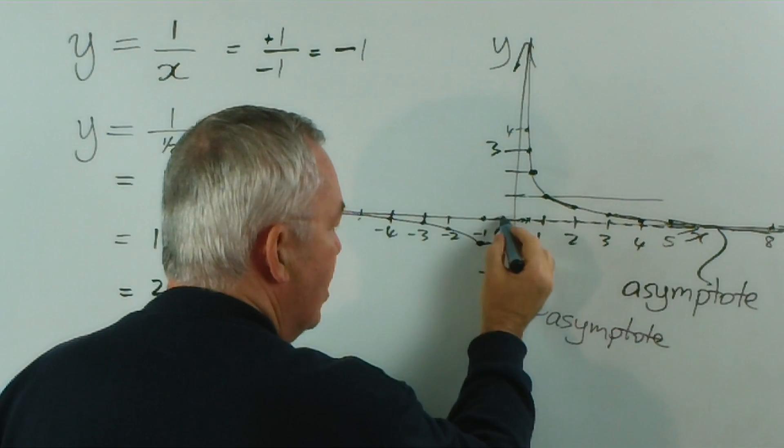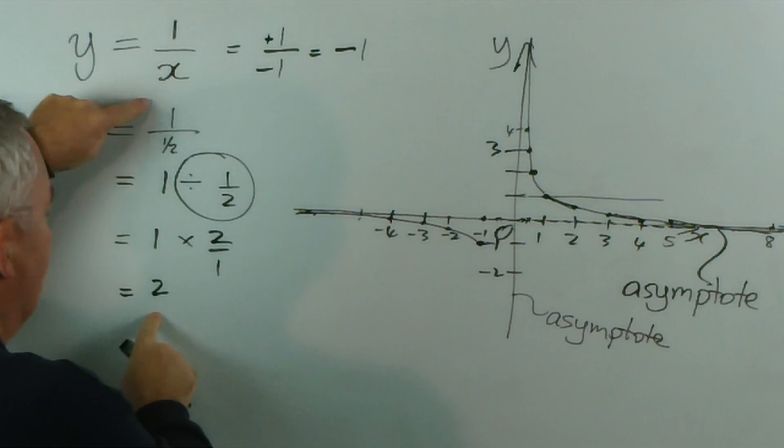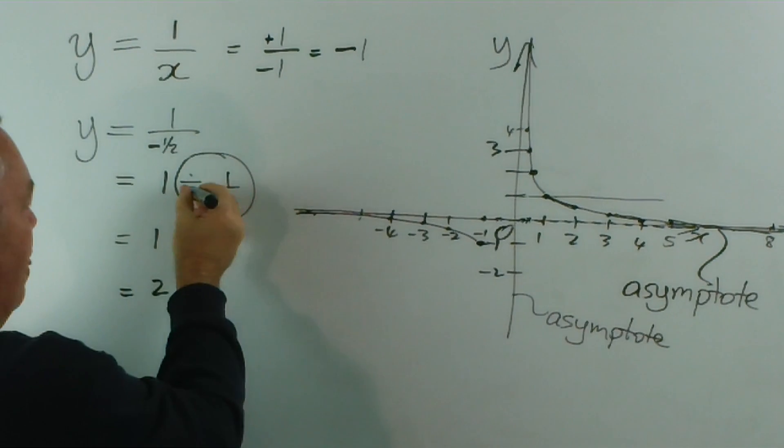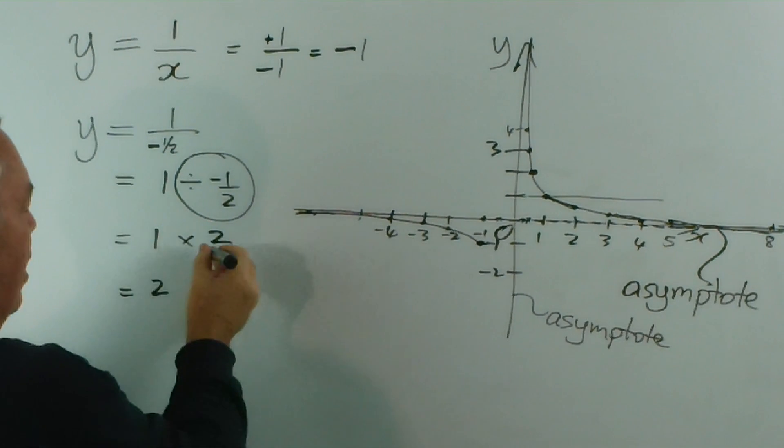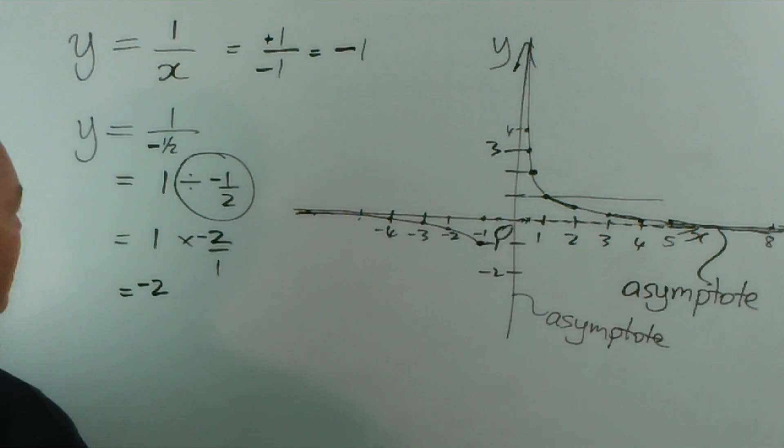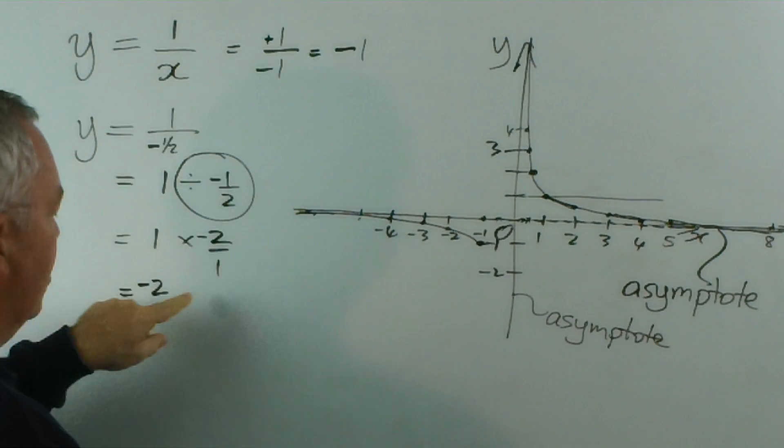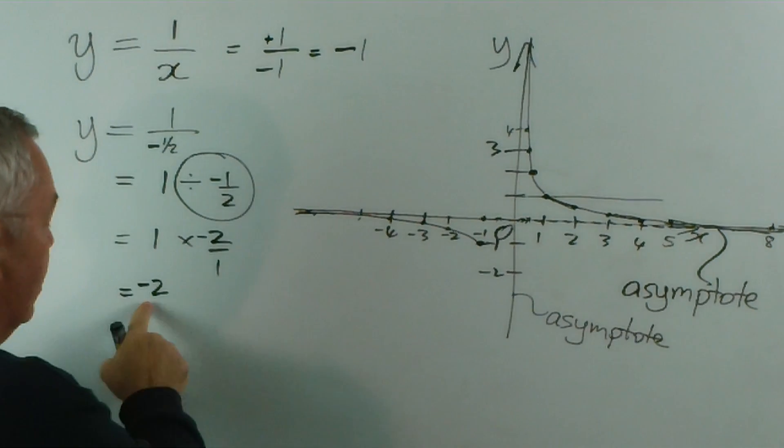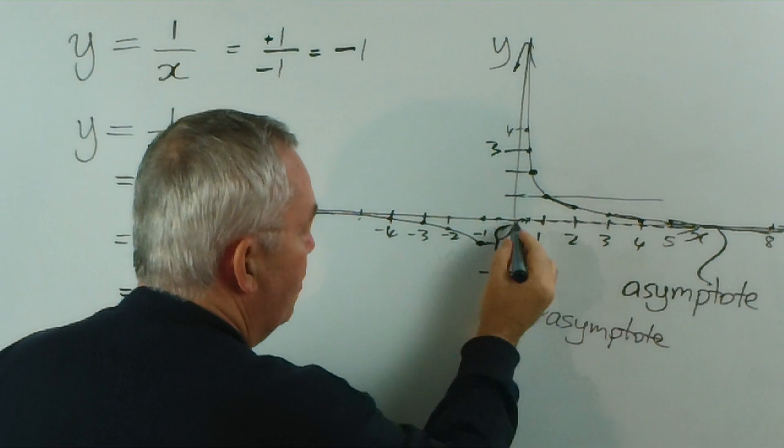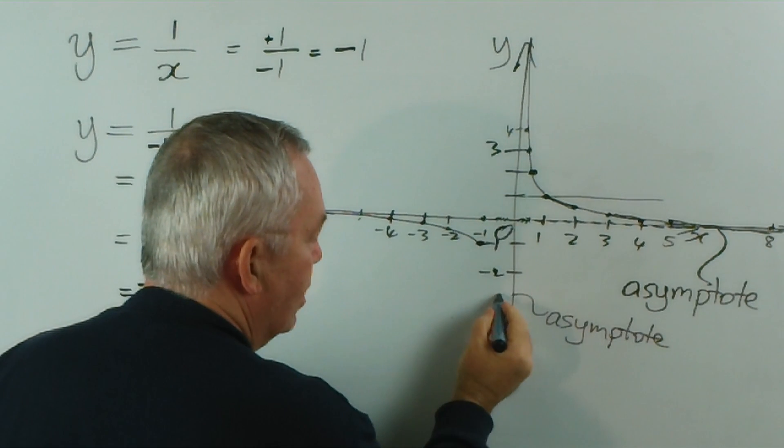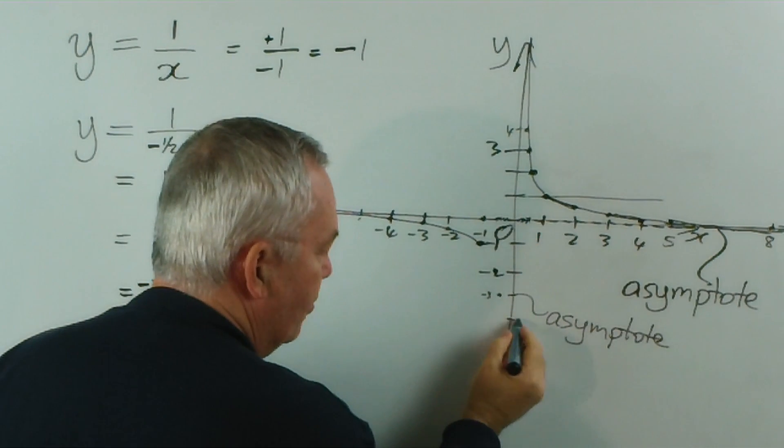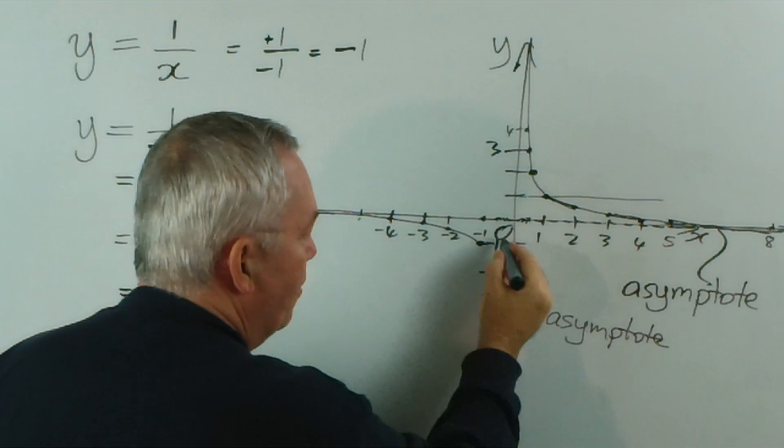And if we look at the fractions here, the same principle applies. If I divided 1 by negative 1 half, I'd be dividing by negative 1 half, which means multiplying by negative 2 and getting negative 2. So all that happens is we introduce a minus sign into all of these calculations. So at minus 1 half, we go down to minus 2. At minus 1 third, down to minus 3, and minus 1 quarter, down to minus 4, and so forth.